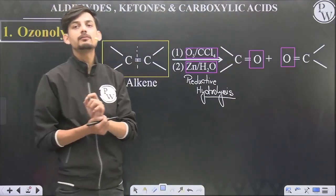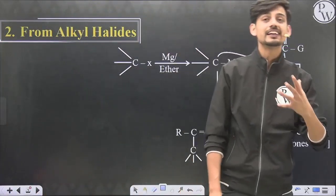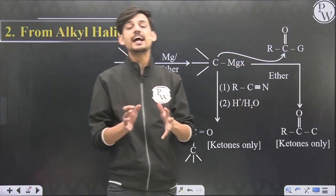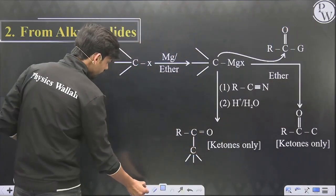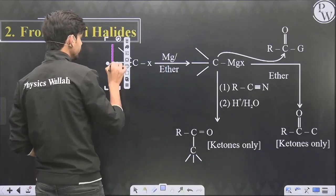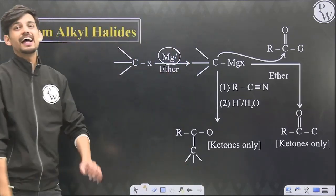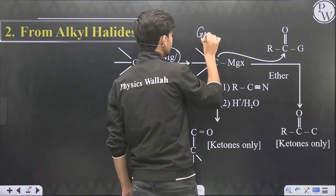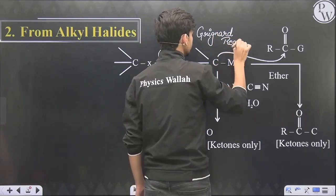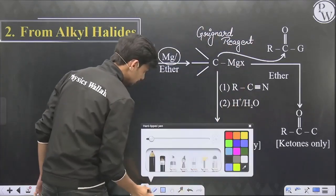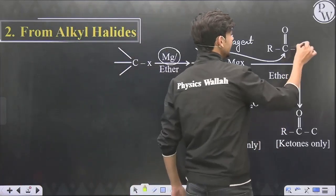The second method is from Grignard reagent. Grignard reagent is a versatile organic compound which can be used to prepare most compounds. We take an alkyl halide and react it with magnesium metal; it forms alkyl magnesium halide, which is known as Grignard reagent. Now there are two different routes to prepare an aldehyde or ketone using this reagent.